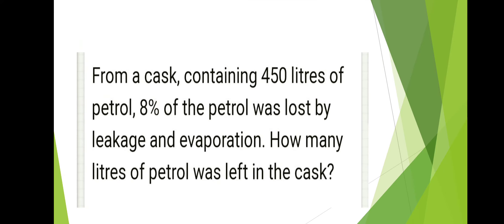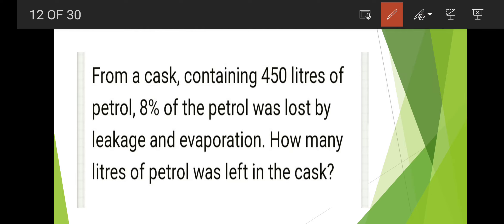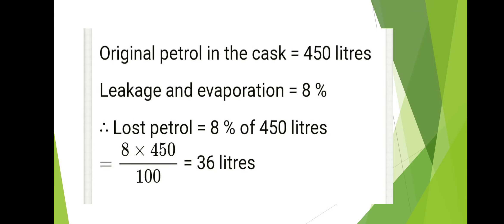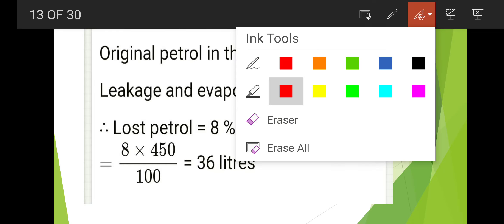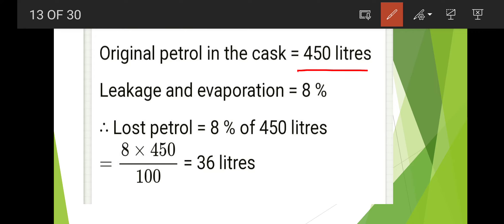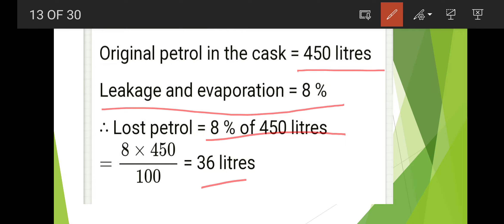Next: from a cask containing 450 liters of petrol, 8 percent of the petrol was lost by leakage and evaporation. How many liters of petrol was left in the cask? Original petrol is 450 liters, leakage and evaporation is 8 percent. So 8 percent of 450 equals 36 liters lost.